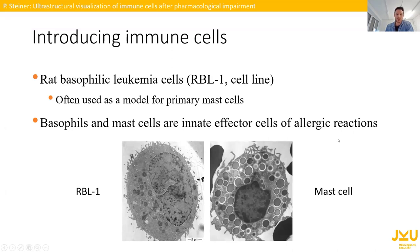Both basophils and mast cells are innate effector cells of allergic reactions and are therefore very interesting for us as pharmacologists. Here we have two two-dimensional transmission electron microscopic images of an RBL-1 cell and a mast cell.